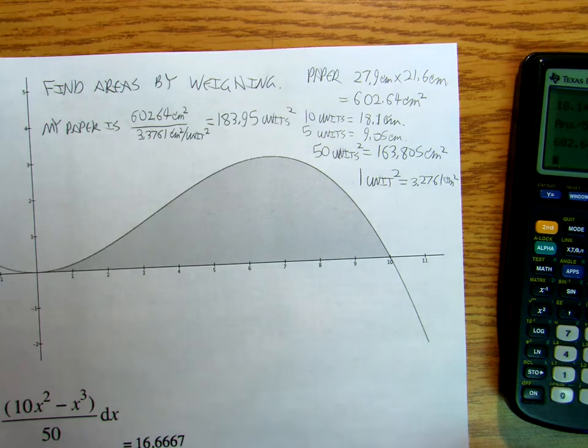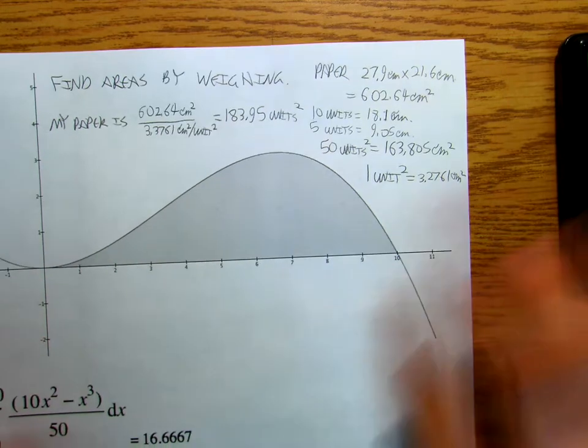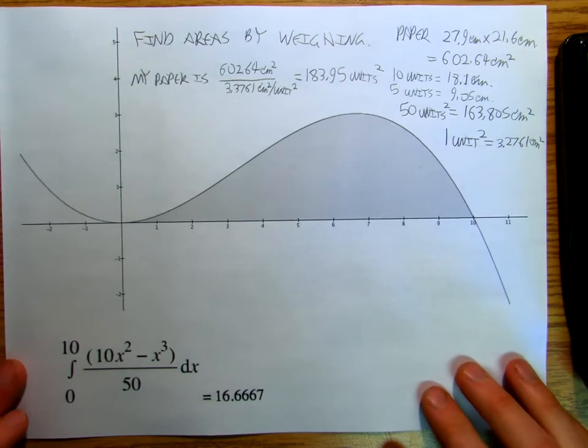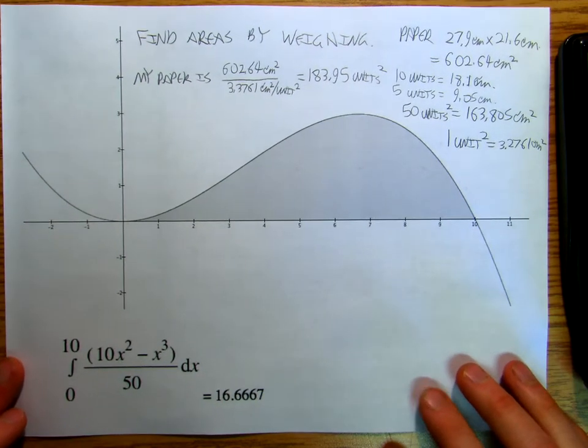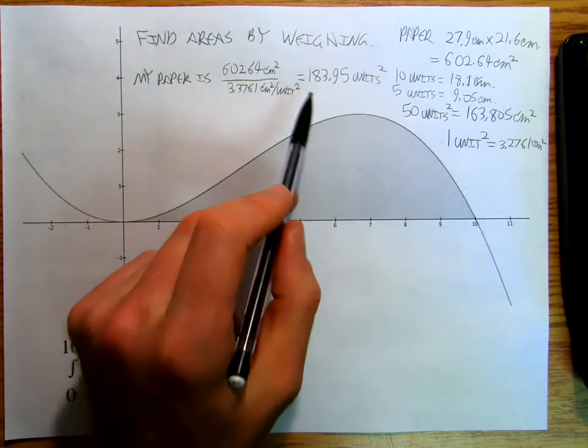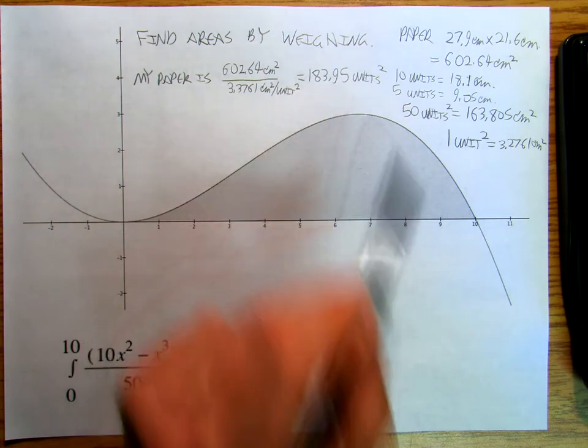Okay. So I'm saying that my sheet of paper in units is 183.95 units squared.